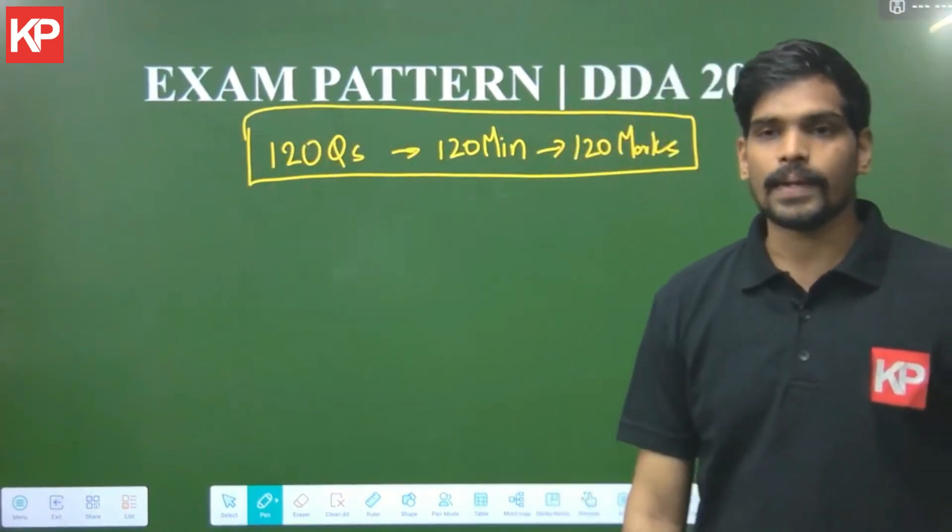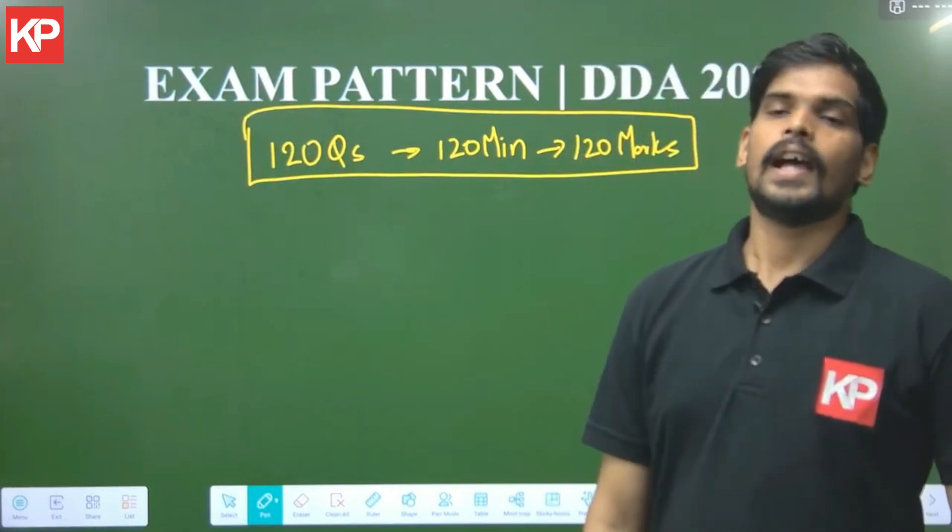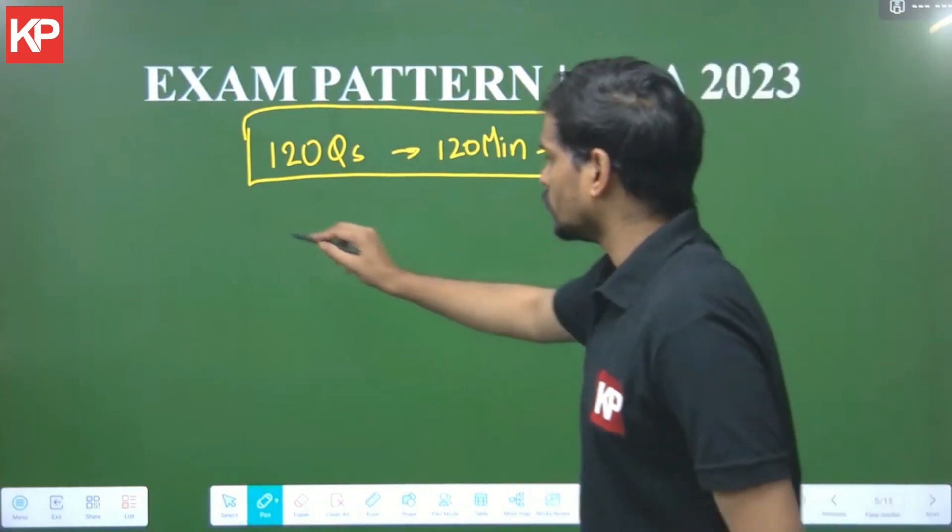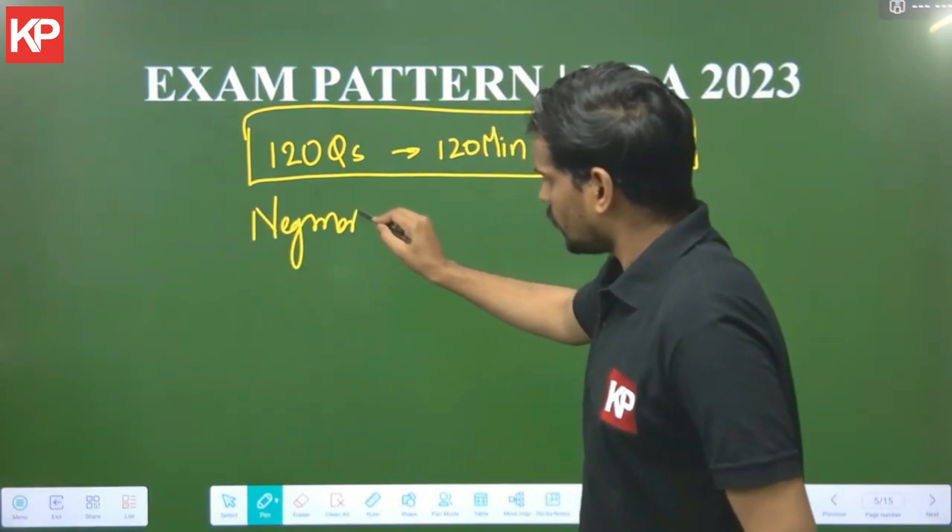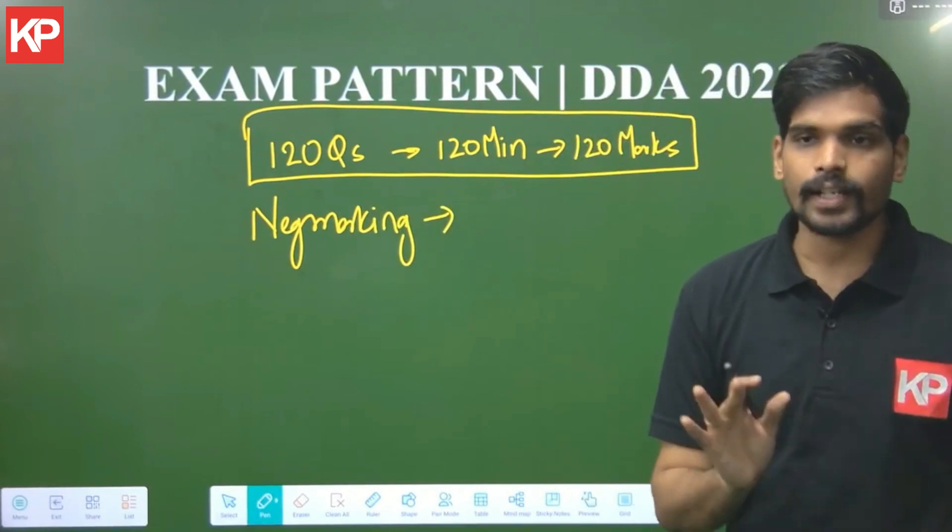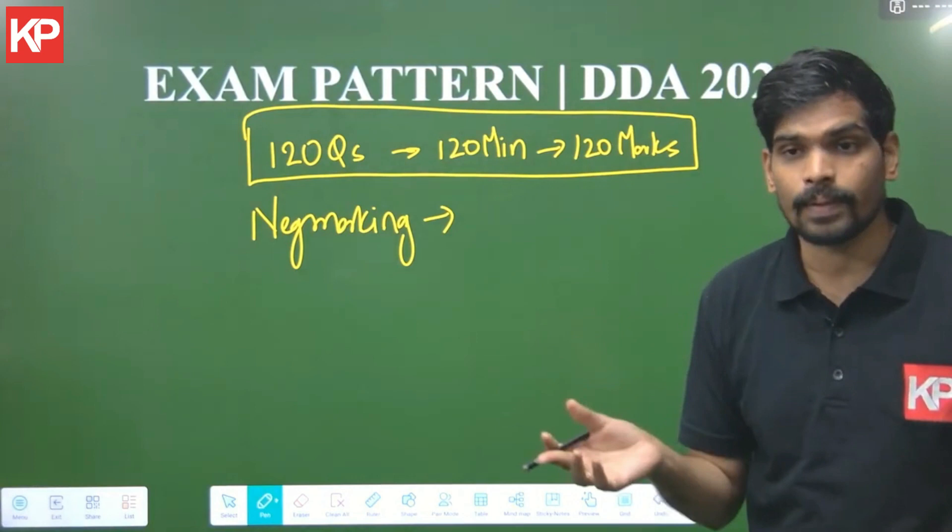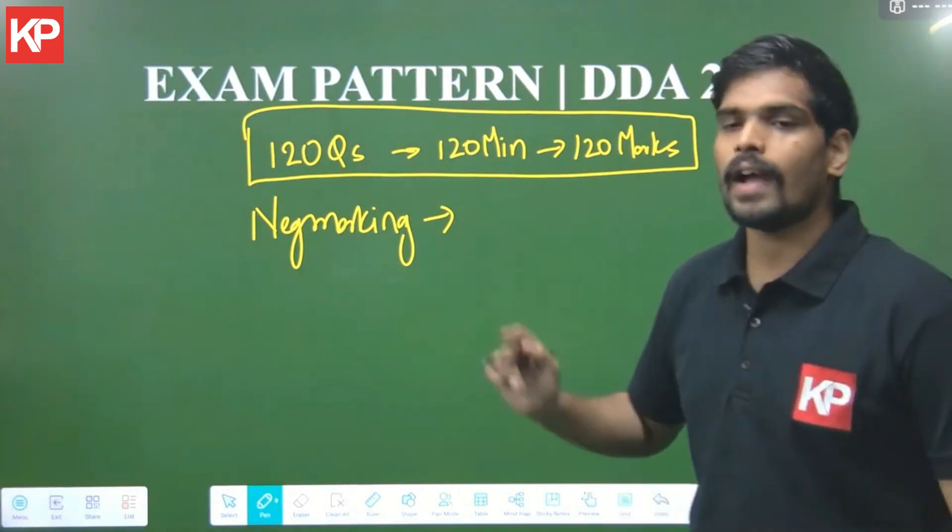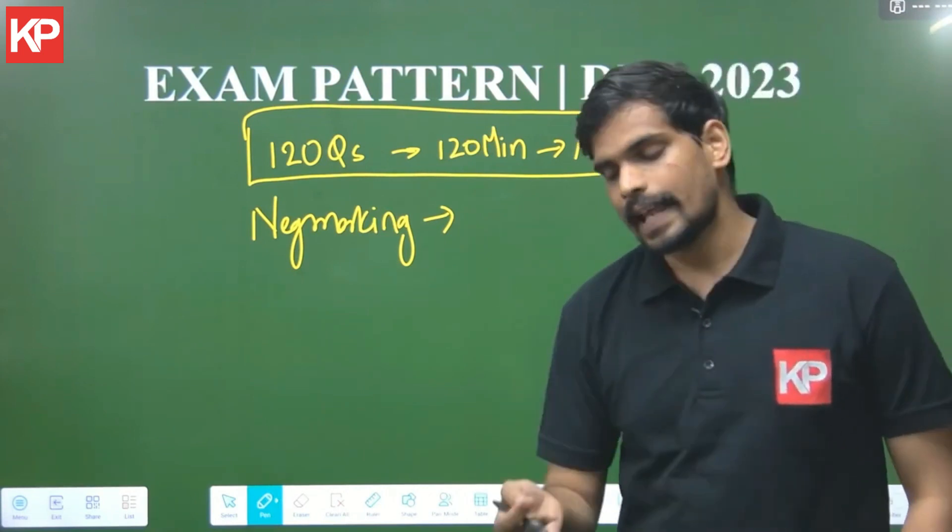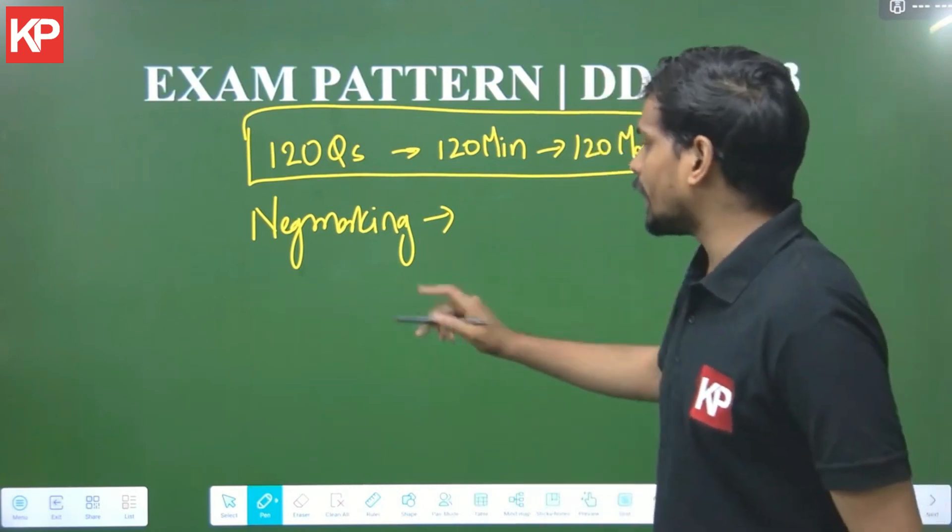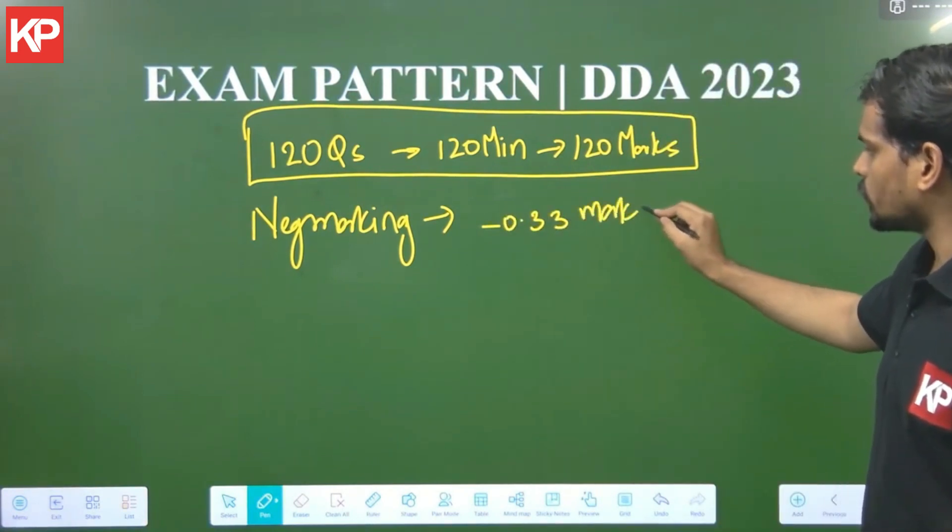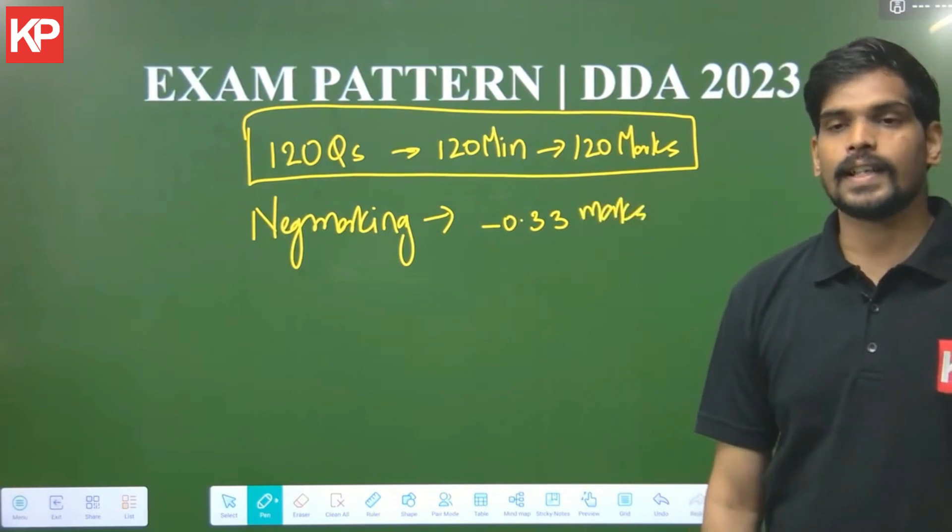So the average time which is available in this exam is one minute per question and all the questions are one mark weightage and there is negative marking for all the questions also. If you read a question, if you do not know the answer and you just leave it, you will get zero marks. There is no negative marking in that case if you leave something. But if you write an incorrect answer, you will get negative marking to ensure that people are not doing guesswork. Negative marking as per the official notification is minus 0.33 marks. So one third of the marks will be deducted for each and every incorrect attempt.